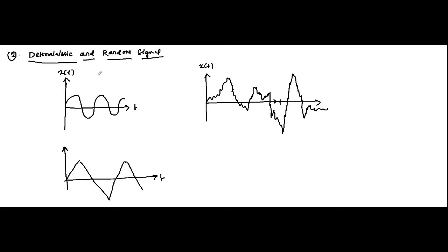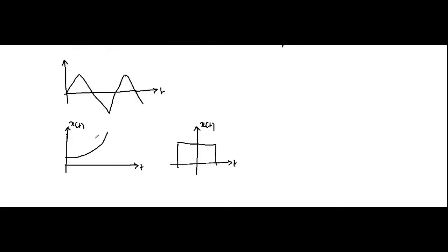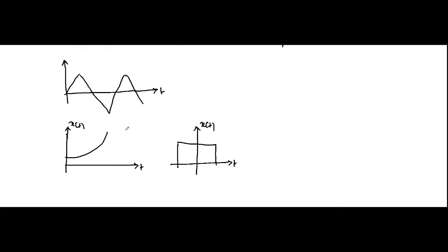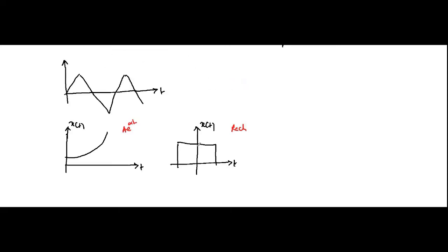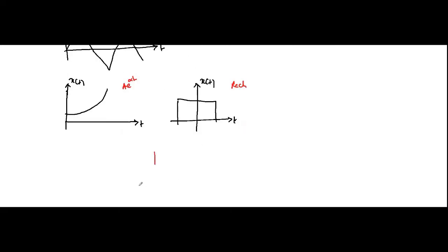We have a sine signal, then we have an exponential signal, a rectangular pulse function, and a triangular pulse function — all of these signals can be represented with the help of a mathematical equation.